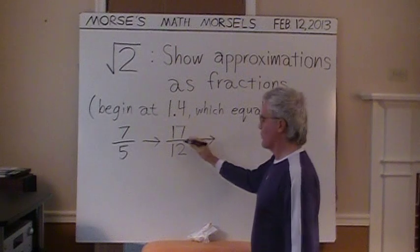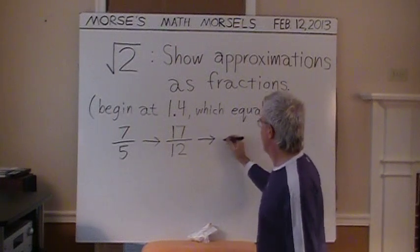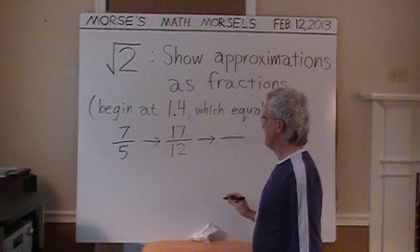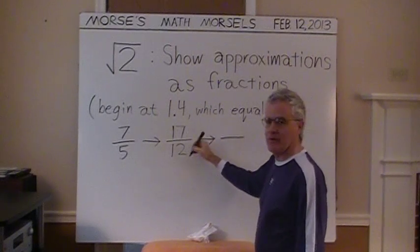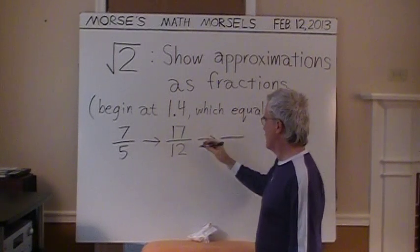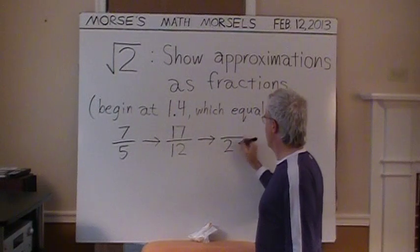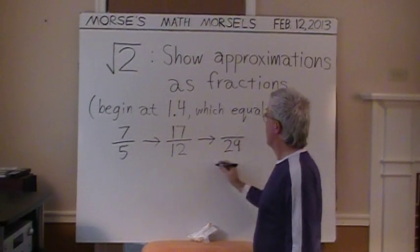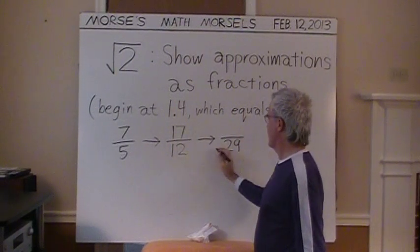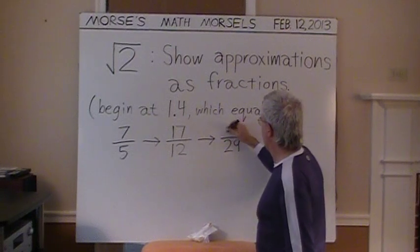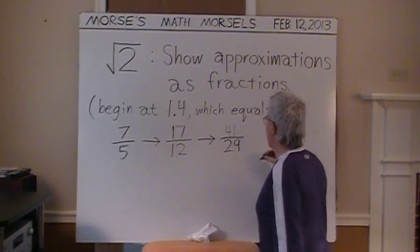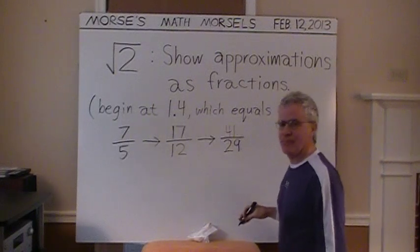If I use the rule for adding numerators and denominators, our next fraction will be: add the two numbers in this 17 twelfths fraction, put that in the denominator. Then add the two existing denominators, 12 and 29, make 41. How close is that to the square root of 2?